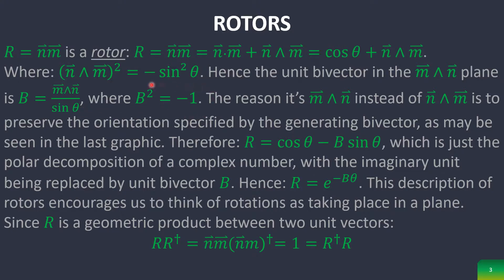And remember that this does square to negative 1. The reason why we use M∧N not N∧M is to preserve orientation specified by generating the bivector. If you need proof of that, look back in the graphic on the last slide.